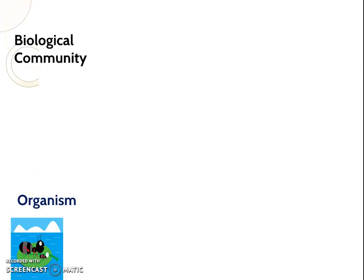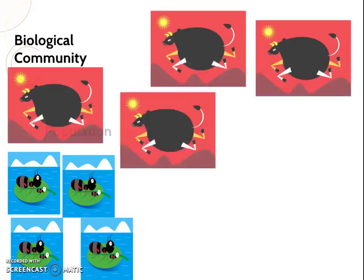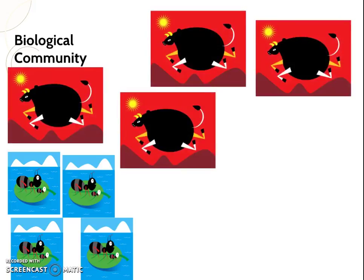An organism is one living thing. We group similar organisms and we get a population. So a population is the same species in the same place at the same time — like the number of people in Indiana today, or the number of dogs in Crawfordsville in 1973: same species, same place, same time. If we get two populations, or maybe all of the populations in an area at the same place and time, now we've got a biological community. That's where that term was supposed to appear.